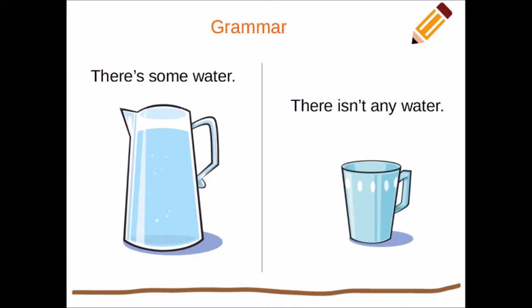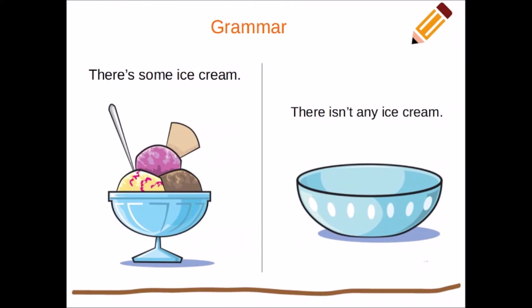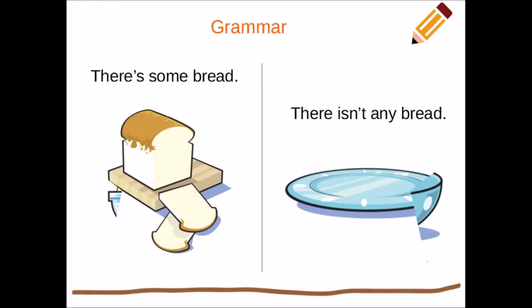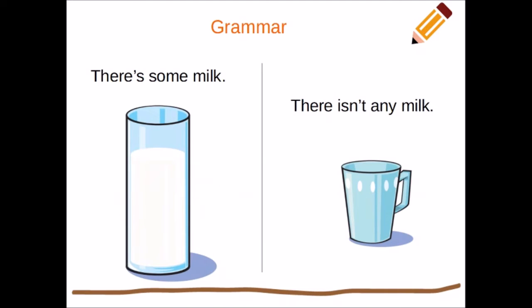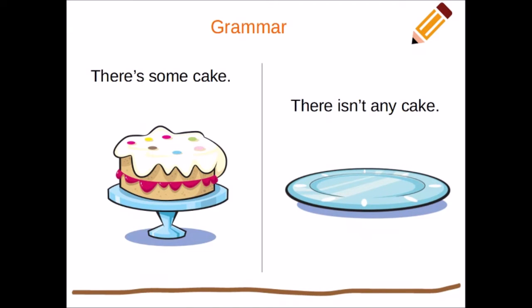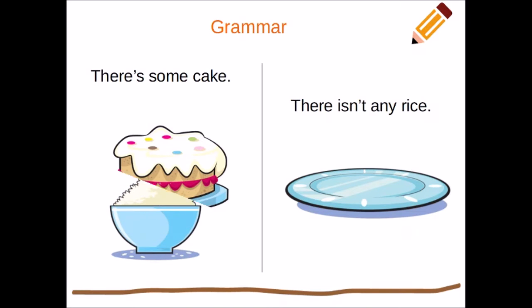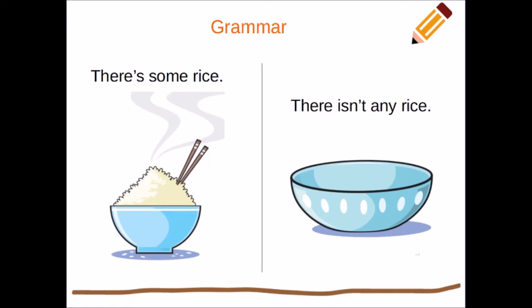There's some water. There isn't any water. So we can see the pitcher holding the water is full of water while the cup is empty. There's some ice cream. There isn't any ice cream. There's some bread. There isn't any bread. There's some chicken. There isn't any chicken. There's some milk. There isn't any milk. There's some cake. There isn't any cake. There's some rice. There isn't any rice.